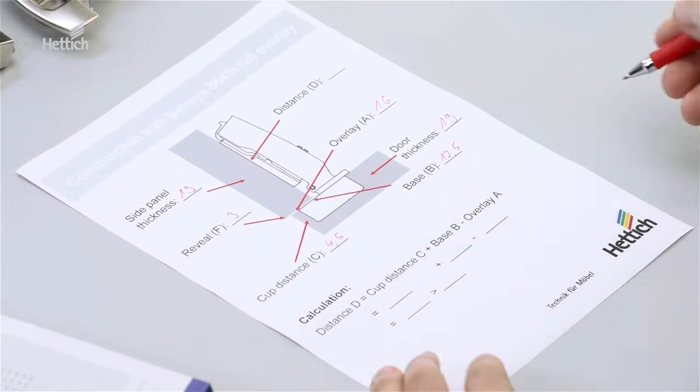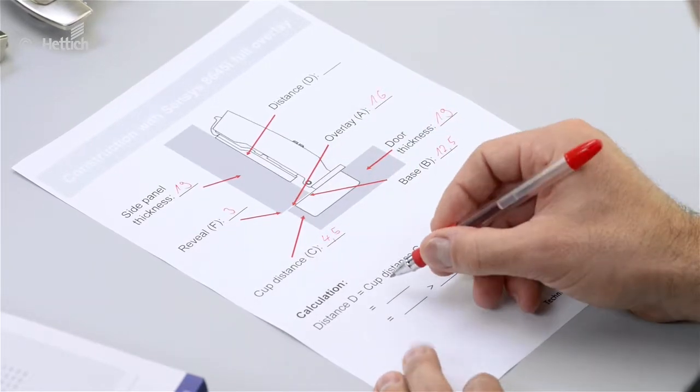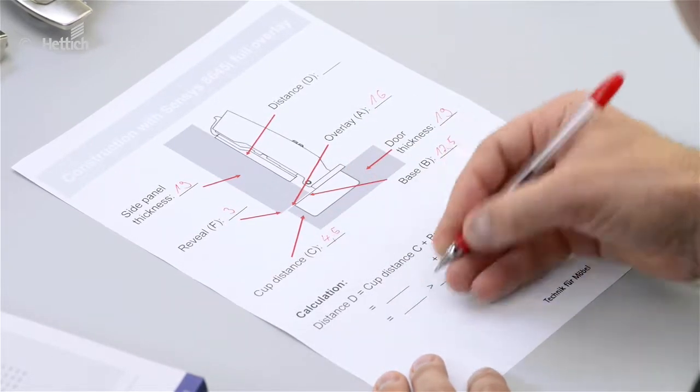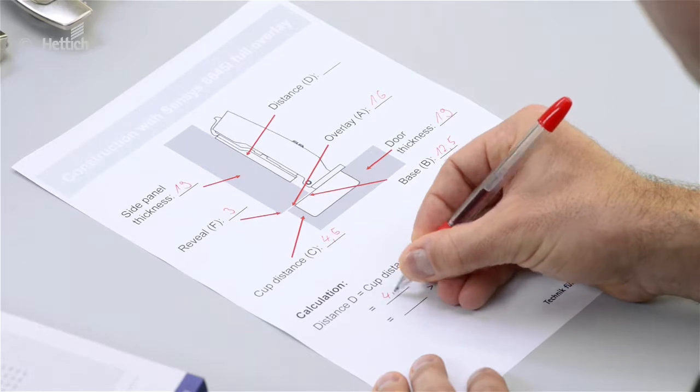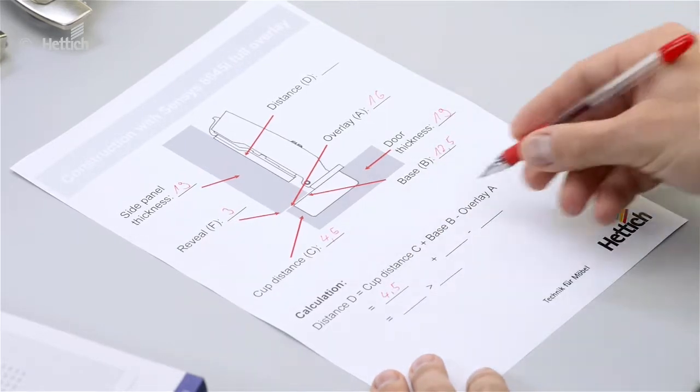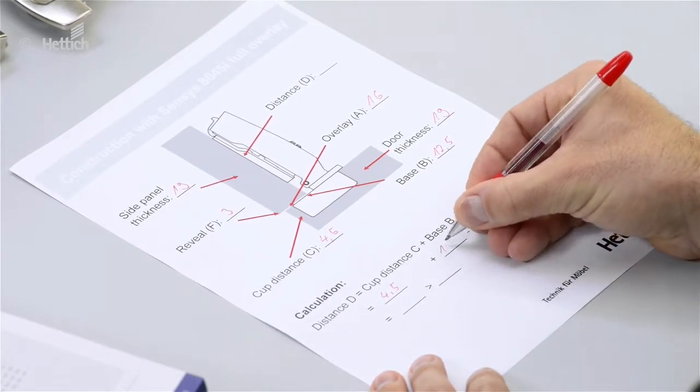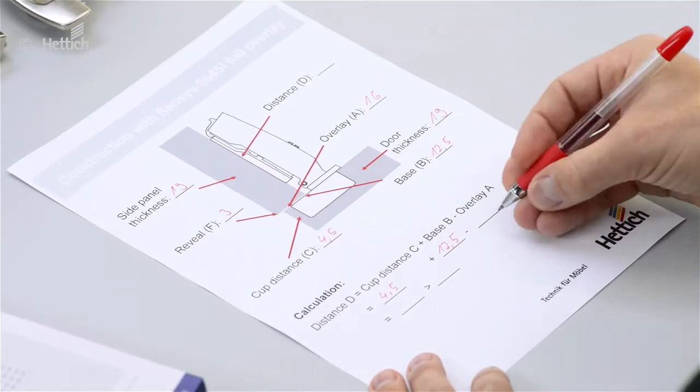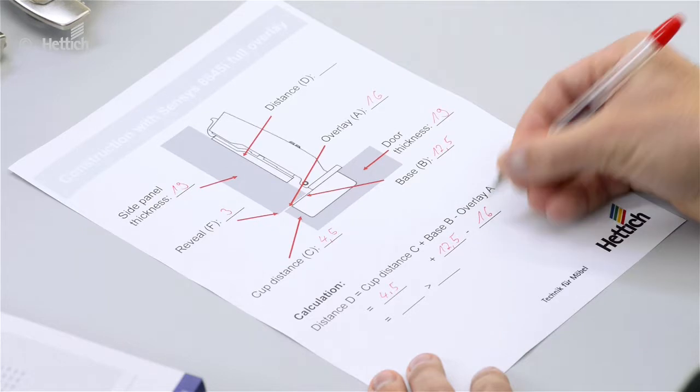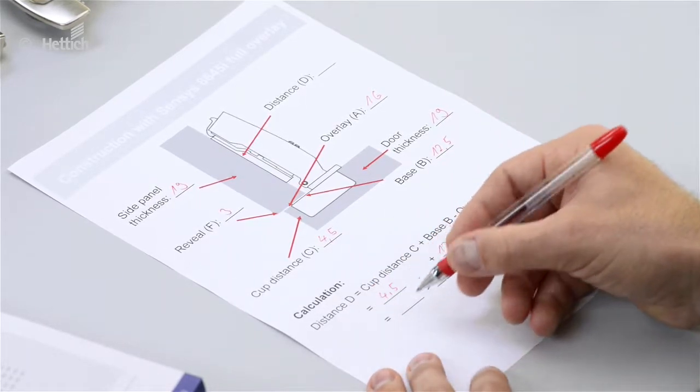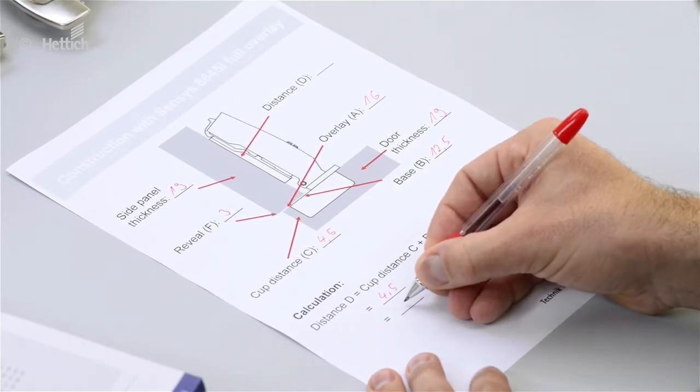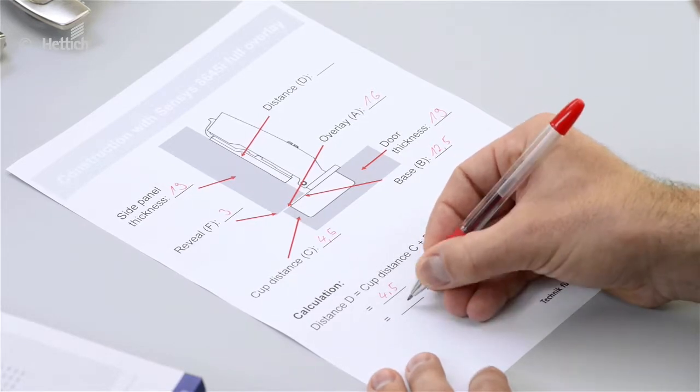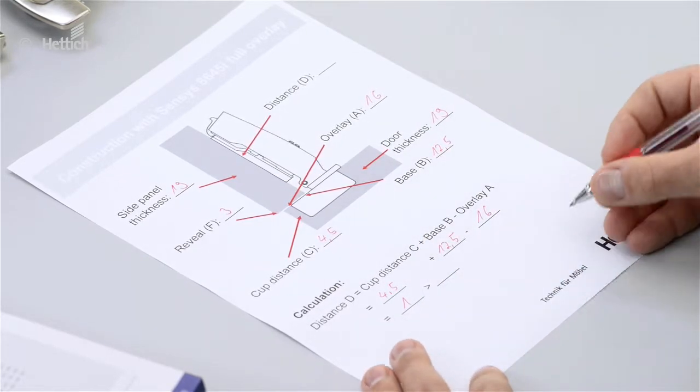Then we can go to the formula. So the cup distance C is 4.5, base B is 12.5 and the overlay is 16 mm. So we have a mounting plate distance of 1 mm.